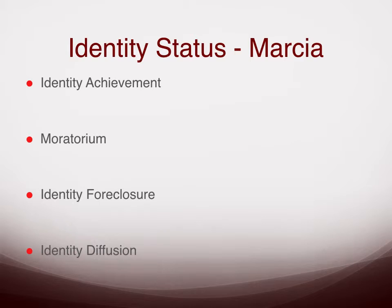The second identity status is moratorium. The word moratorium means a delay or a holding pattern. Individuals in moratorium have made no commitment but are actively in the process of exploring — gathering information, trying out new activities, and trying to find the values and goals that guide their life. They just have not yet made a commitment. These are individuals who might change their college major five times while trying to figure out what they want to do.